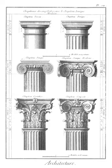Dormer: a structural element of a building that protrudes from the plane of a sloping roof surface. Dormers are used, either in original construction or as later additions, to create usable space in the roof of a building by adding headroom and usually also by enabling the addition of windows.